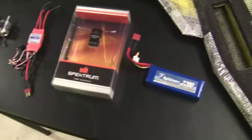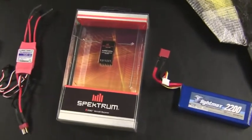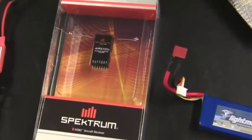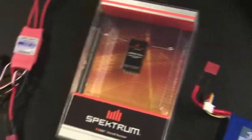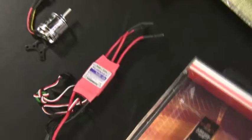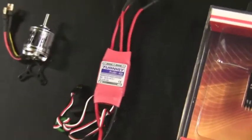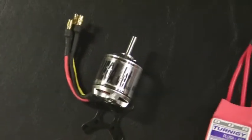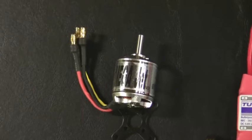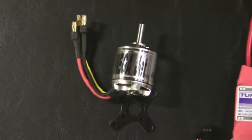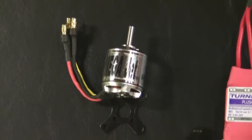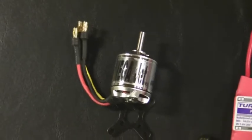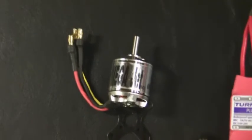For this plane we're going to be using the Spectrum 6 channel receiver since I have a DX6 6 channel radio. We'll also be using a Turnigy 40 amp brushless ESC speed controller. And for the engine I'll be using the Grayson Hobbies Super Megajet. It's rated at roughly close to 400 watts when used with the 6.4 prop and 3S LiPo battery.